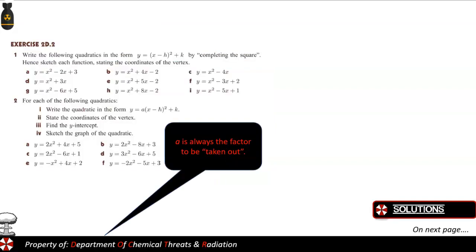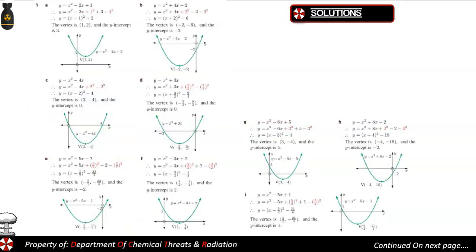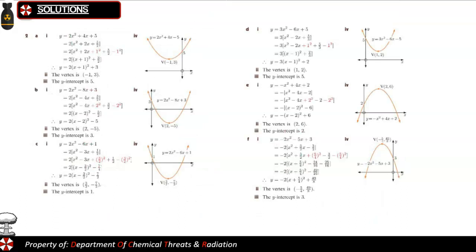So that's what they're doing in these problems. Let's try some practice. Using the exact same process, sketch and state the coordinates of the vertex. Let's look at A, D, G, C, F, I. And for the next one, for 2, we're writing the quadratic, stating the coordinates, finding the y-intercept, then sketching the graph. Let's just look at B, D, F for this one. And as I said, A is always the factor to be taken out. So remember, we need to pull those out as well. Solutions are here. So these are the solutions for question 1 up to I, question 2 up to F.